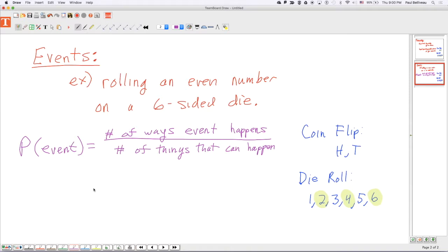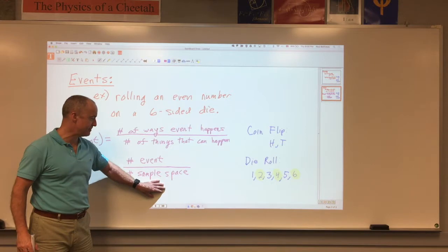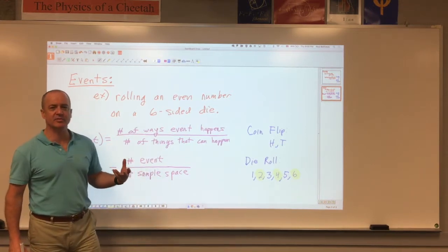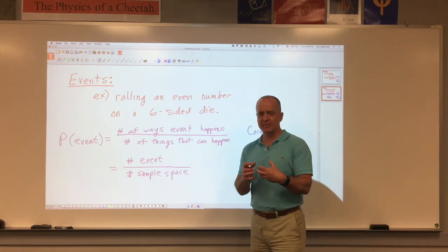So, it's really the number of things in your event, divided by the number of things in your sample space. Your sample space, remember, is everything that can happen. Your event is something you've arbitrarily chosen, and it's a small part of your sample space.